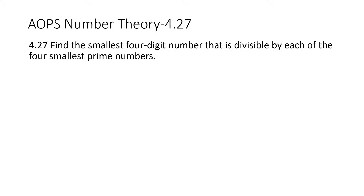In ALPS number theory 4.27, find the smallest four-digit number that is divisible by each of the four smallest prime numbers. So the smallest four-digit number that's divisible by each of the four smallest prime numbers would be the lowest common multiple of 2, 3, 5, and 7.